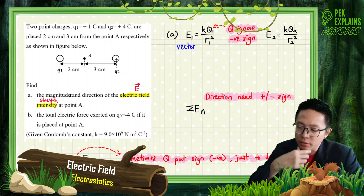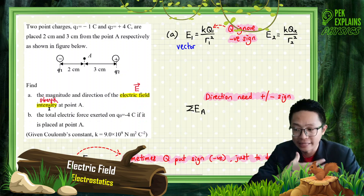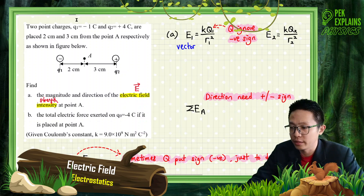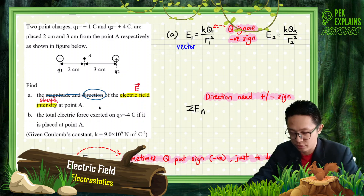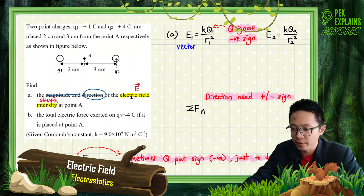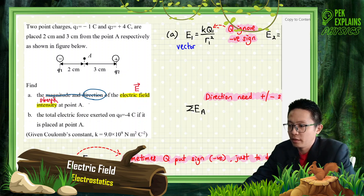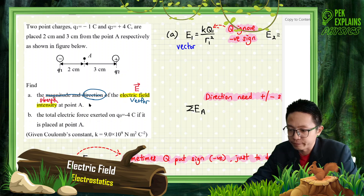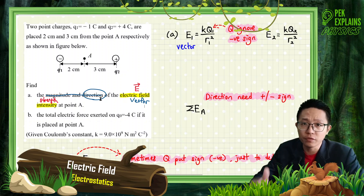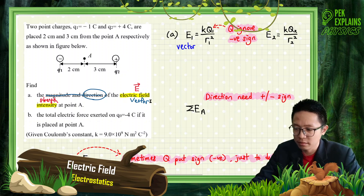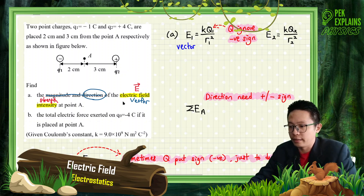The question wants the magnitude and direction of electric field intensity. Even if the question just says 'find the electric field strength at point A,' you still need to give both magnitude and direction. We know electric field is a vector. For a vector, if the question asks for a vector, you must give direction also. If you don't give direction, you will lose marks. Remember that.